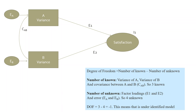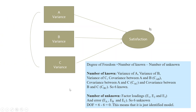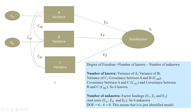Now let us introduce one more indicator, c. The knowns are: variance of a, variance of b, variance of c, covariance ac, covariance ab, and covariance bc — that is 6 knowns. The unknowns are: factor loadings e1, e2, e3 and error terms ea, eb, ec — that is 6 unknowns. The degree of freedom is 6 minus 6 = 0, which is a just-identified model.